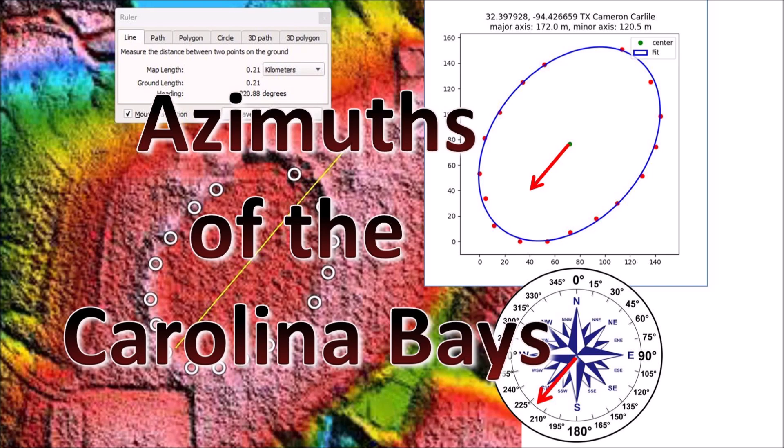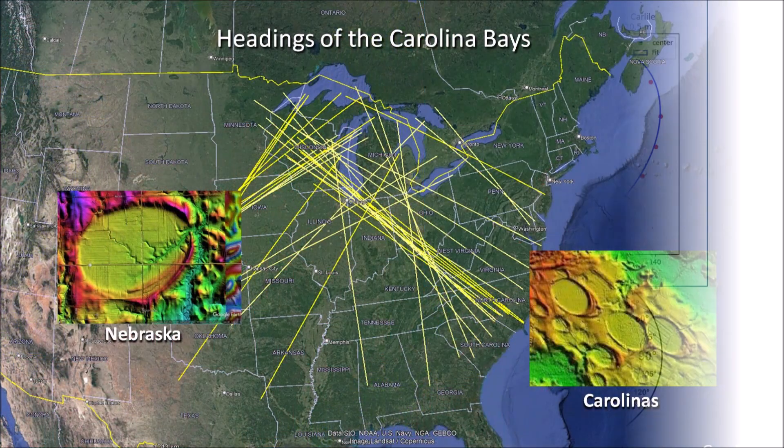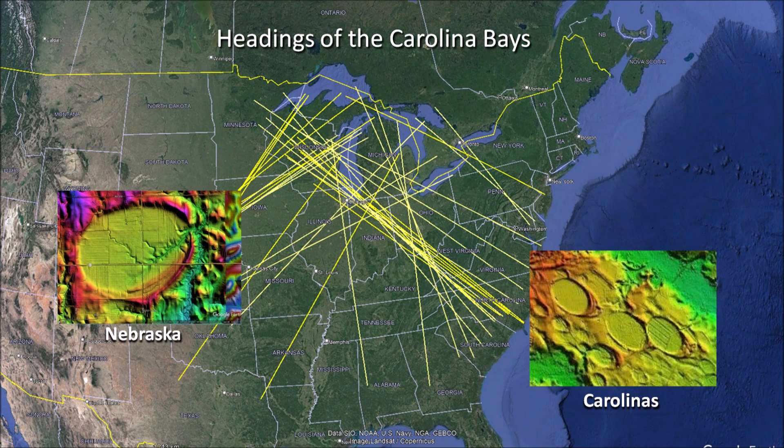This episode describes some of the comments that I get about my videos and how the azimuths, or headings, are calculated by fitting ellipses to the Carolina Bays using the least squares method. The headings of the elliptical basins found on the Atlantic Coastal Plain, Nebraska, and other locations of the United States converged by the Great Lakes. This image shows the great circle trajectories for the basins that I have personally investigated.